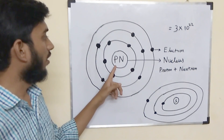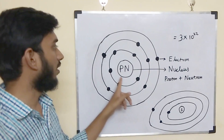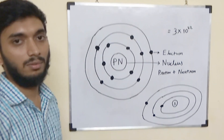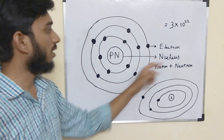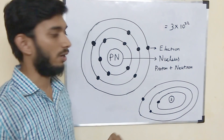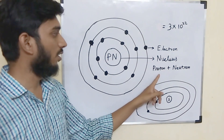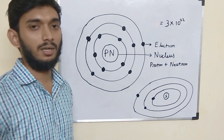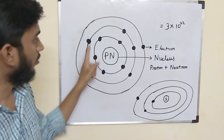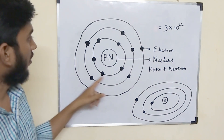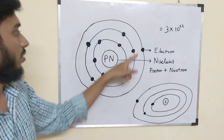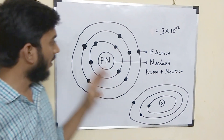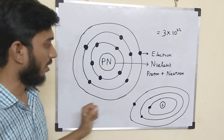This is the nucleus. There are two elements in the nucleus: the proton and neutron. This is the nucleus of the atom. And this is the electron. This structure is easy to understand.